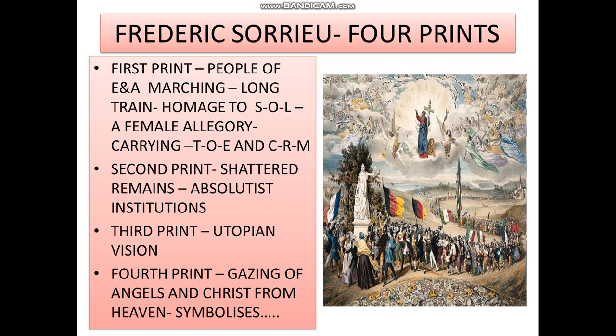The fourth print indicates that from heaven, Christ, saints and angels are gazing at the scene, looking at all human beings as their children. The artist is trying to symbolise fraternity among the nations of the world — all human beings are children of God moving together, exhibiting brotherhood. The different groups of people represent countries like USA, Switzerland, France, Germany, Austria, the kingdom of Sicily, Lombardy, Poland, England, Ireland, Hungary and Russia, their flags indicating the marching people from these nations.